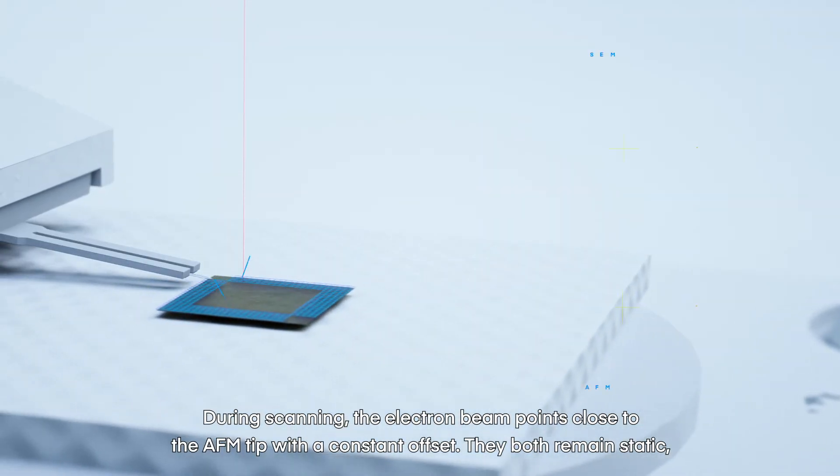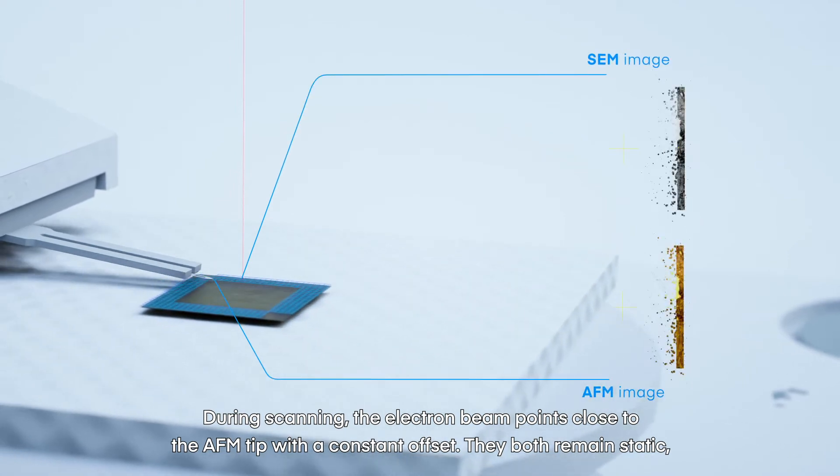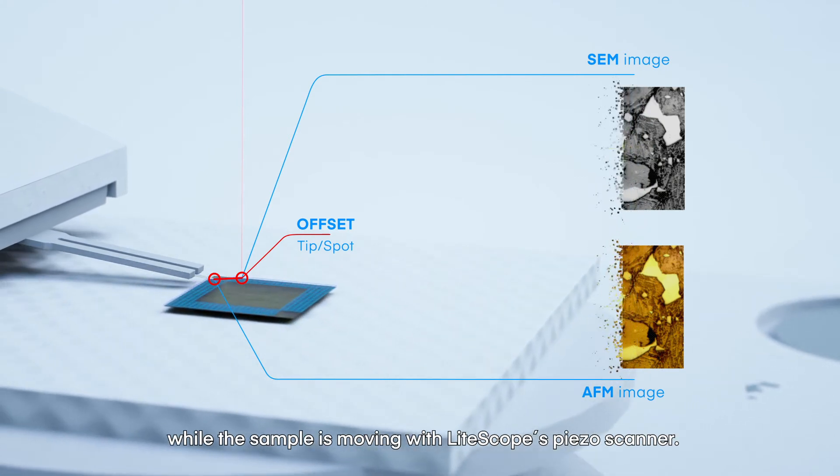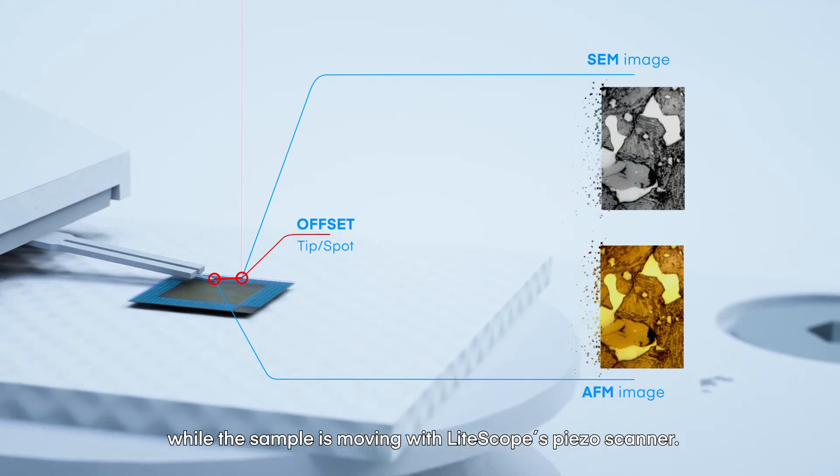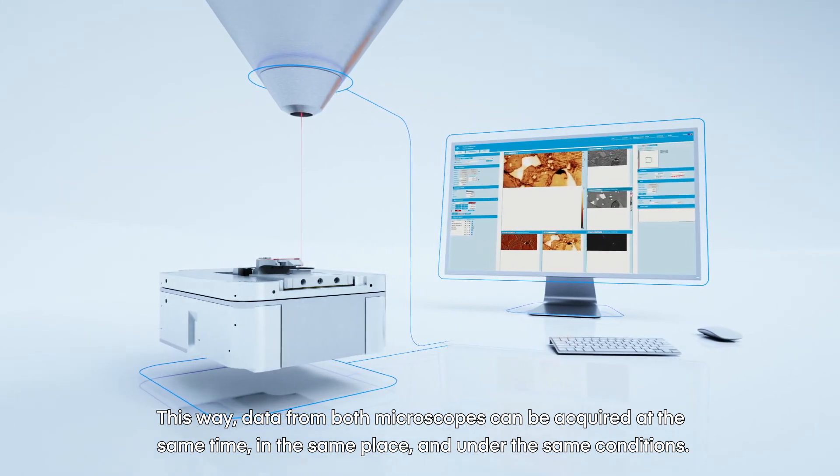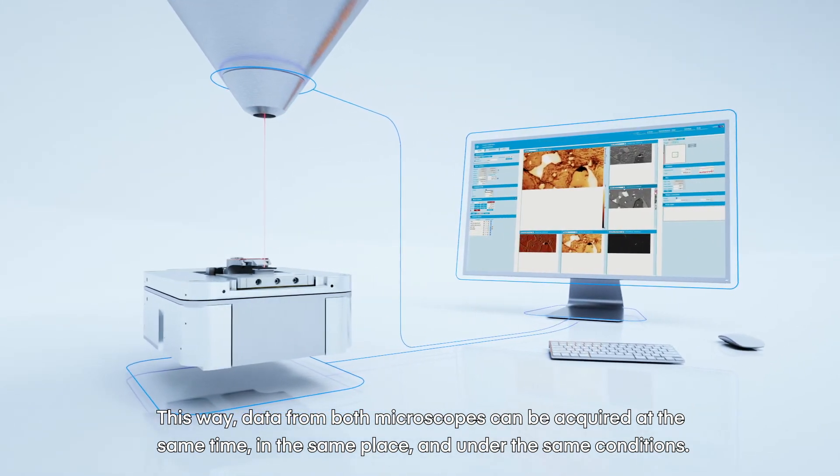During scanning, the electron beam points close to the AFM tip with a constant offset. They both remain static while the sample is moving with LightScope's PISO scanner. This way, data from both microscopes can be acquired at the same time, in the same place, and under the same conditions.